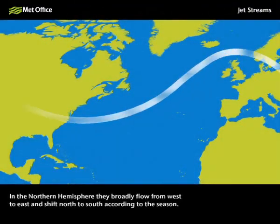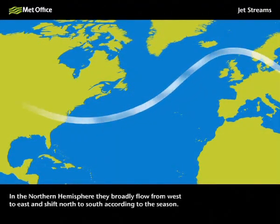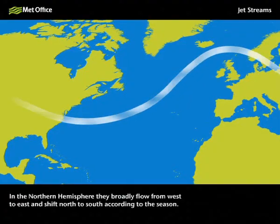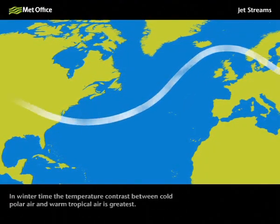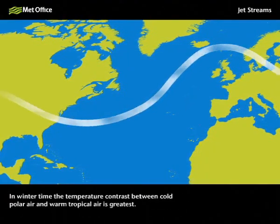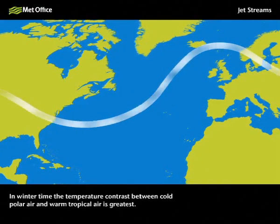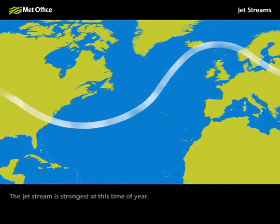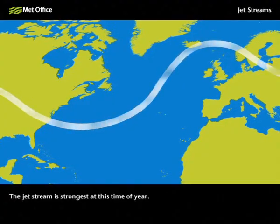In the northern hemisphere they broadly flow from west to east, and shift north to south according to the season. In wintertime the temperature contrast between cold polar air and warm tropical air is greatest. The jet stream is strongest at this time of year.